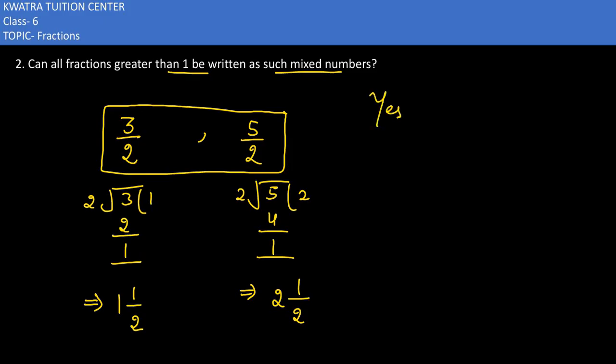And we can very clearly understand how we can get mixed numbers which will be greater than 1. Because in a mixed number, the whole number is there always.